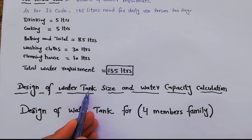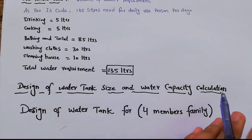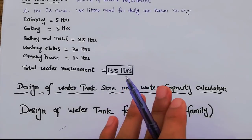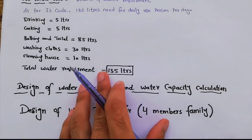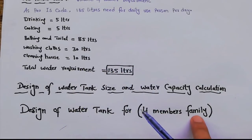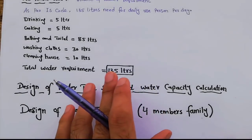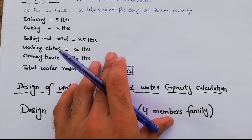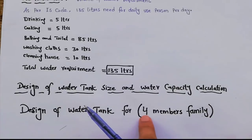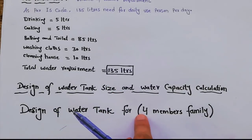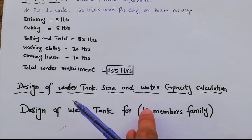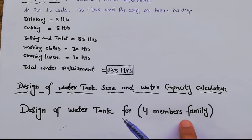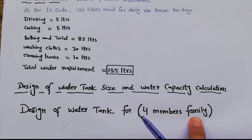Now, design of water tank size and water capacity calculation. We have to design a water tank for a four-member family. You can change the four members to ten or fifteen depending on your family size — just learn the formula for how to find the volume of a water tank.